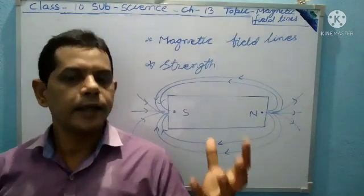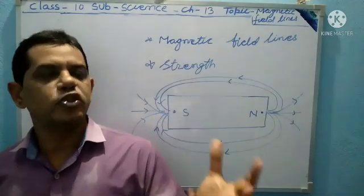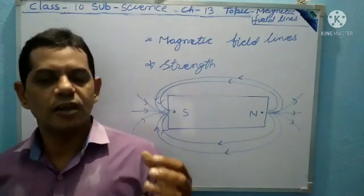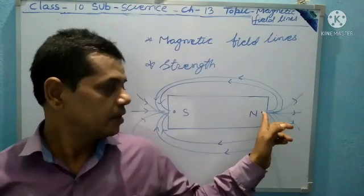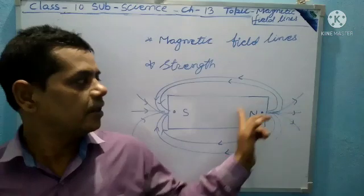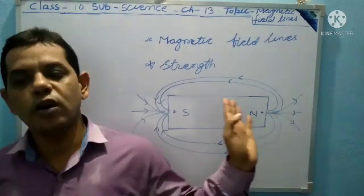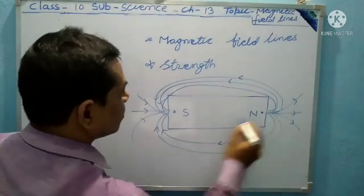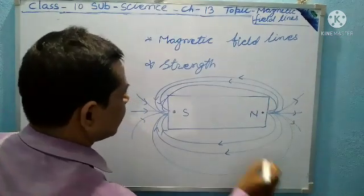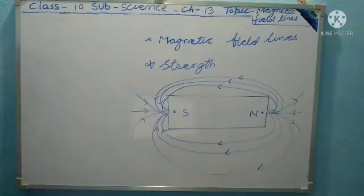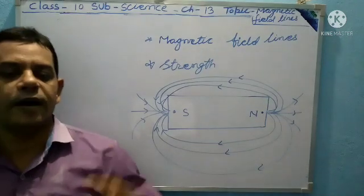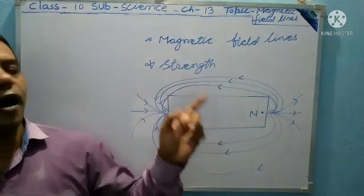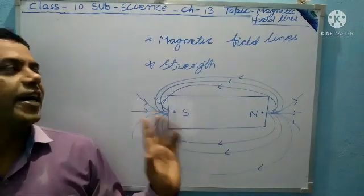In a bar magnet, the magnetic field lines look like this type. This is a North pole and South pole — that is the magnet and that is the magnetic pole. These are lines which show the direction of magnetic force and its strength.